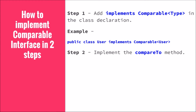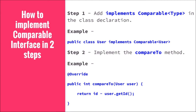In step number two, we have to implement or override a method called compareTo. This is the only method you need to override to implement the Comparable interface. The purpose of this method is to tell us which object will be placed in which position and how to compare the collection of objects. For example, here we are passing a User object to compareTo since Comparable specifies User. The same User object should be passed to the compareTo method.